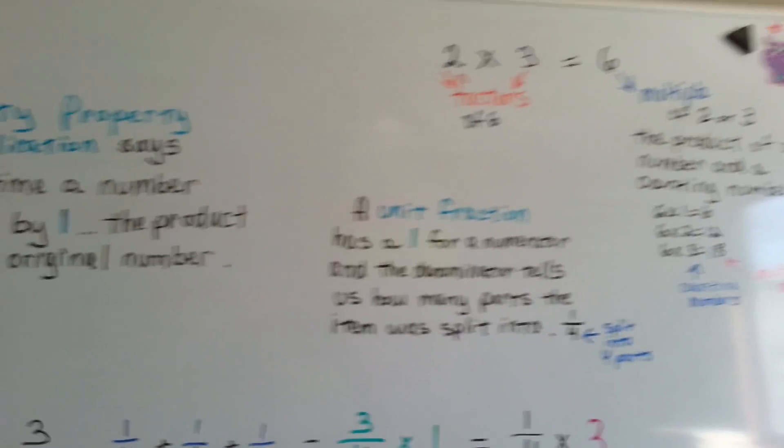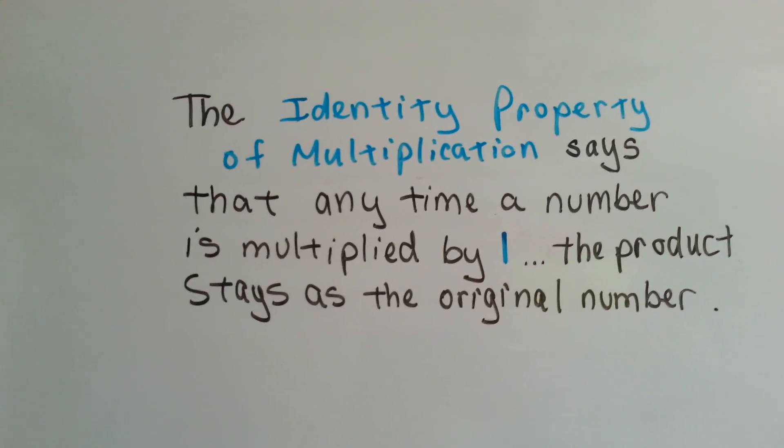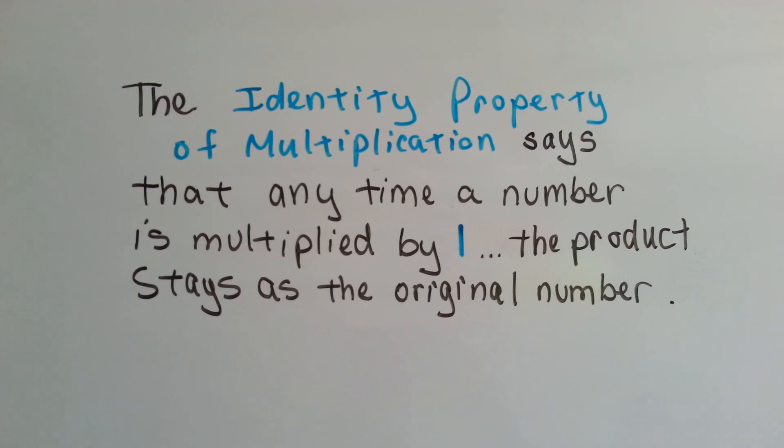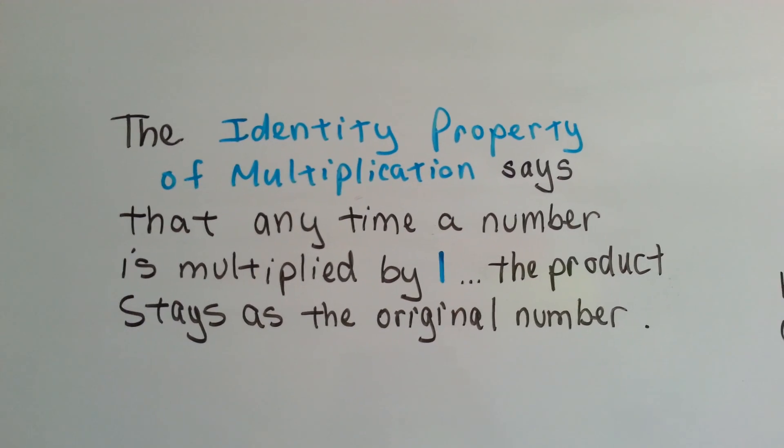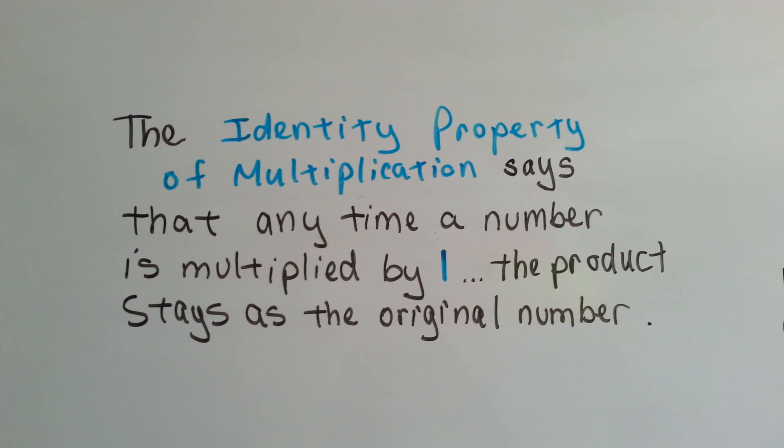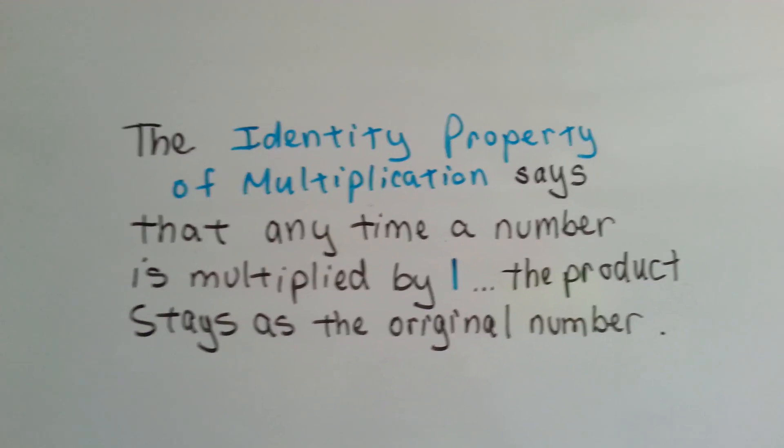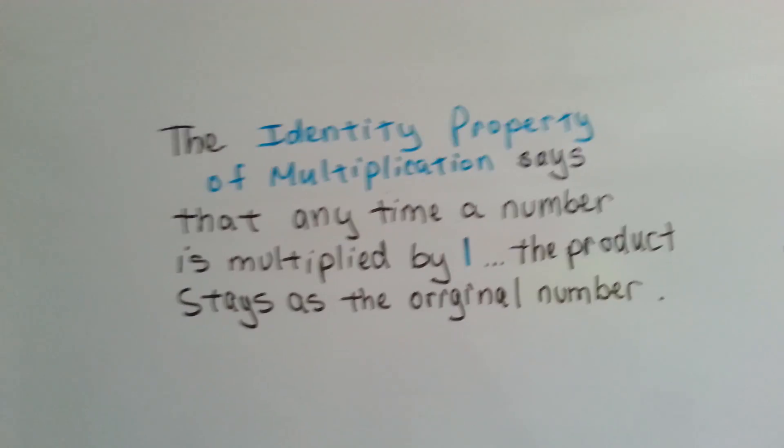Now I've got one more thing I want you to remember from previous videos. In fact, the video right before this one. The identity property of multiplication says that anytime a number is multiplied by 1, the product stays as the original number. So 3 times 1 stays as 3. 99 times 1 stays as 99. 1 million times 1 stays as 1 million. It keeps its identity.